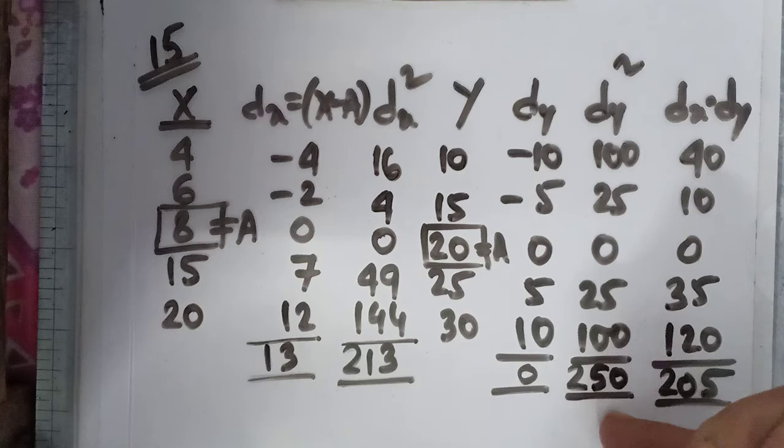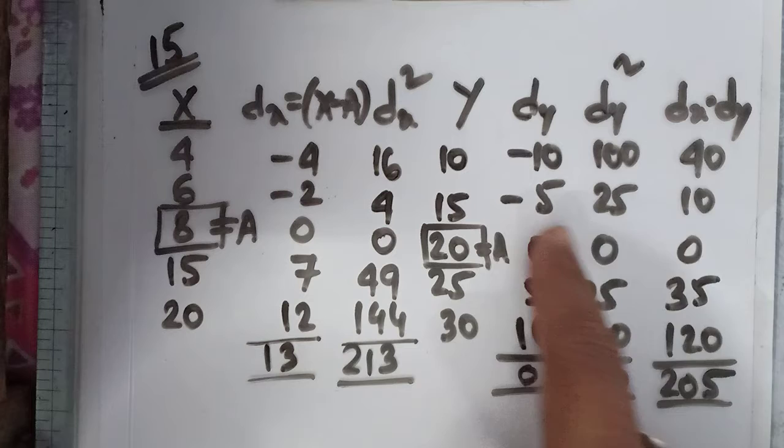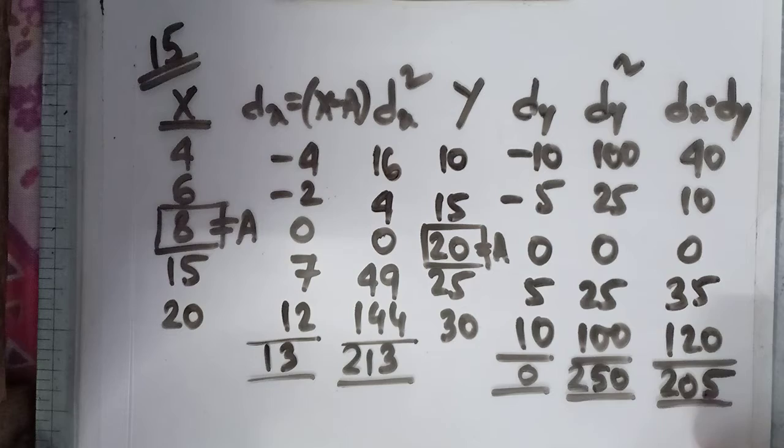And then dx into dy: this value minus 4 into dy minus 10, 40; minus 2 into minus 5, 10. In this way you get dx into dy and get the sum of dx dy.